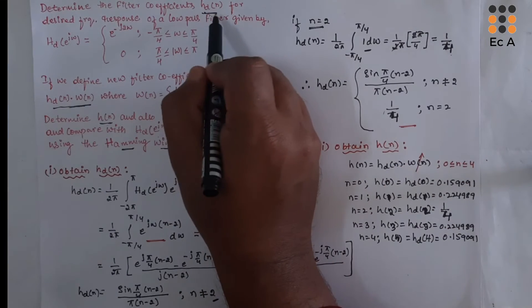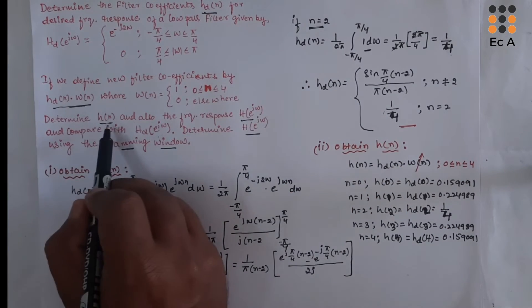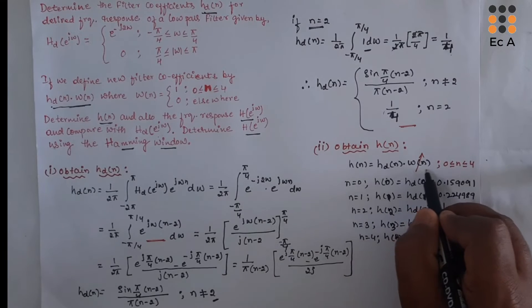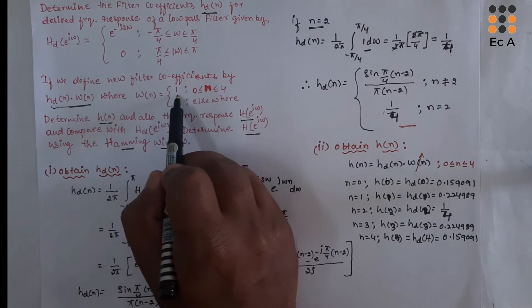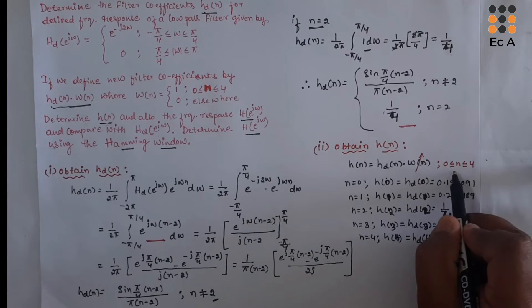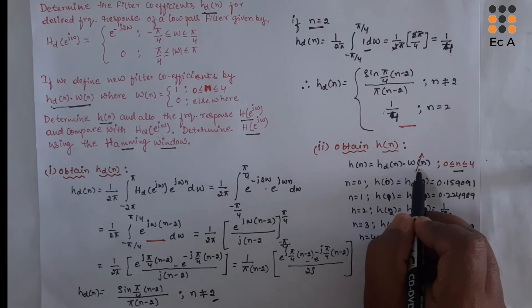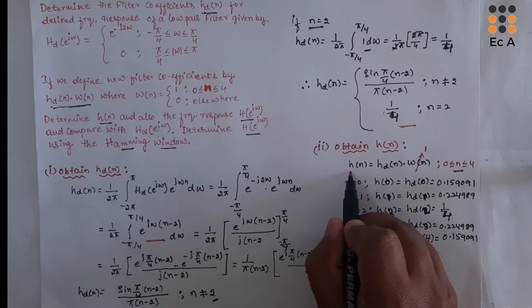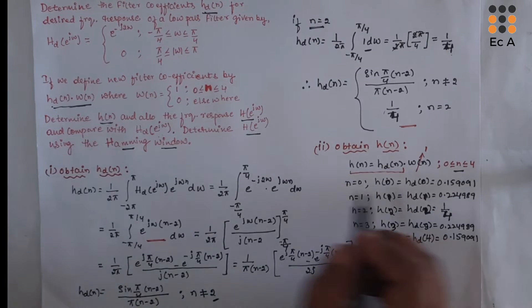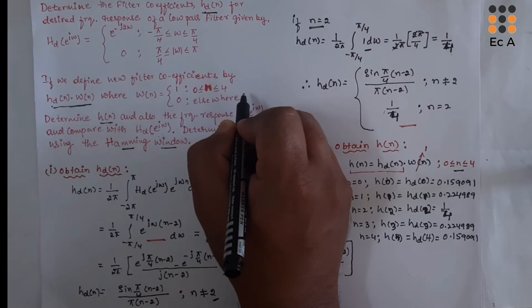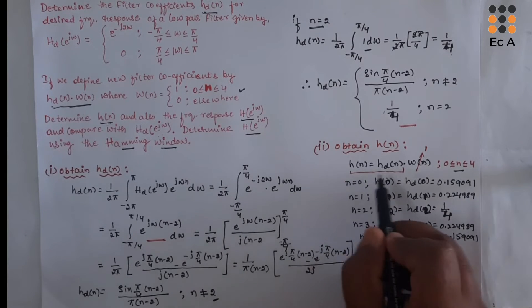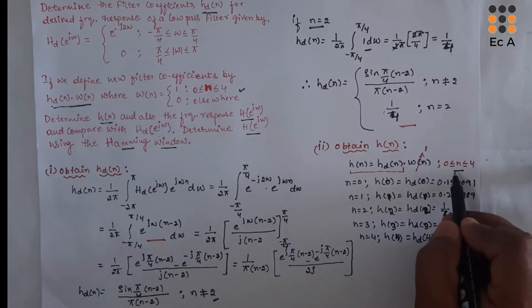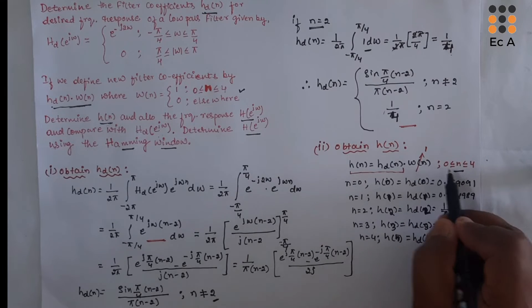Now to find H of N, which is HD of N times omega of N. Here omega of N is given as 1 for N ranging from 0 to 4. So making omega of N equal to 1, we are left with H of N equal to HD of N. This is the rectangular window. So to find H of N, we take H of N equal to HD of N.